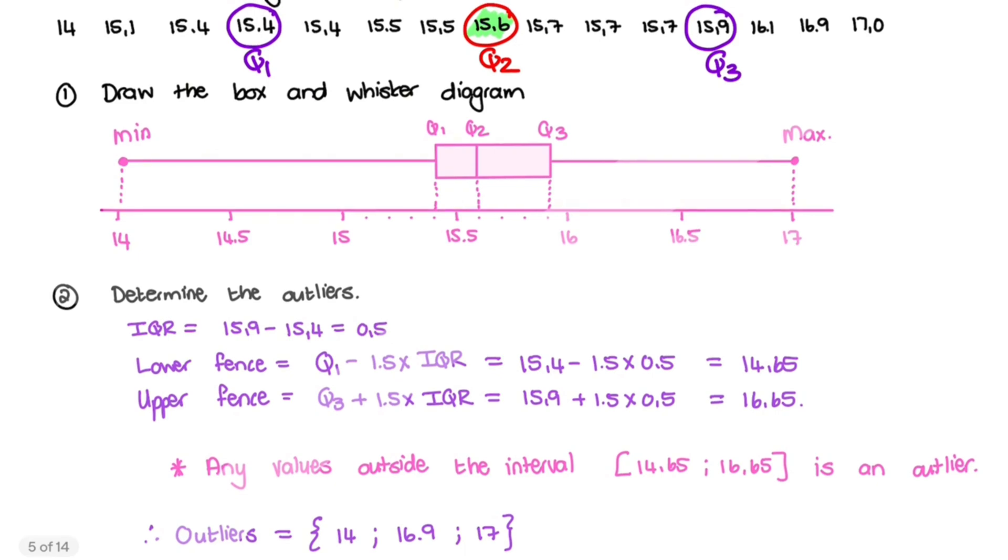Now that we have that, we can move on to the second question that says, determine the outliers. Now for the outliers, we need three things. We need quartile 1, quartile 3, and the IQR. Now quartile 1, we already identified as 15.4, and quartile 3 as 15.9. Now remember, the IQR is the difference between quartile 3 and quartile 1. And that difference is 0.5 on this example.